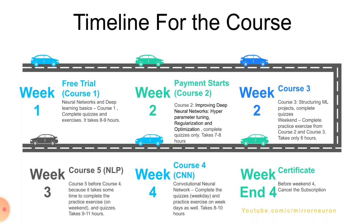In week two I completed Course 2 and Course 3. Course 2 is about improving deep neural networks — tuning hyperparameters and optimization techniques — and took me around seven to eight hours including quizzes and video tutorials. Course 3 is about how to structure a machine learning project. During the weekdays of week two I completed the video tutorials and quizzes, and I finished the exercises from Course 2 and Course 3 over the weekend.